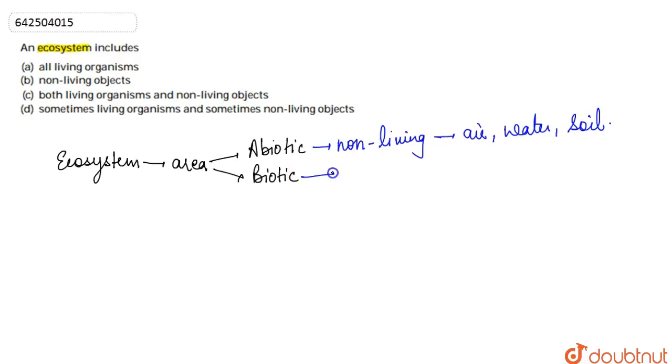And the biotic components - these are basically the living components of the ecosystem, such as plants, animals, fungi, etc. So these are the two components of the ecosystem.